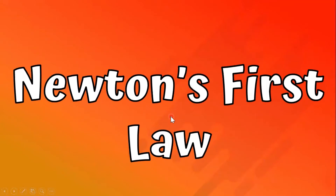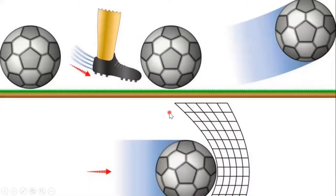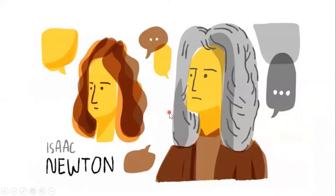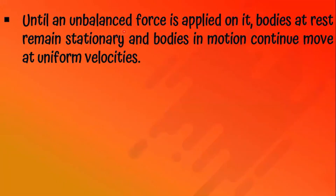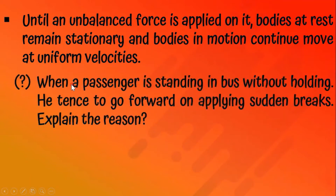So let's discuss Newton's first law. Until an unbalanced force is applied on it, bodies at rest remain stationary and bodies in motion continue to move at uniform velocities. There is a question: when a passenger is standing in a bus without holding, he tends to go forward when sudden brakes are applied. Explain the reason.